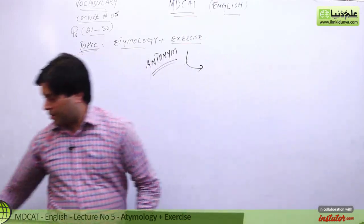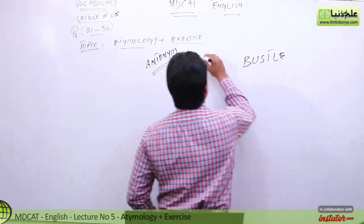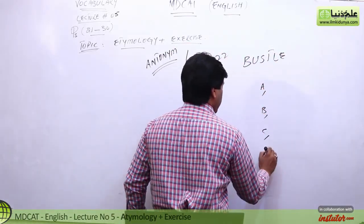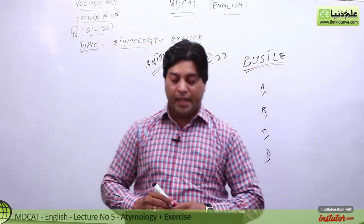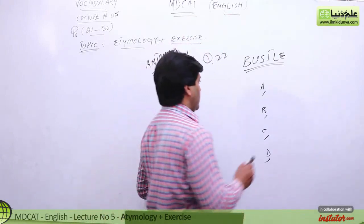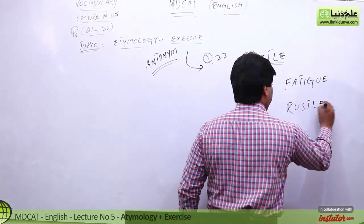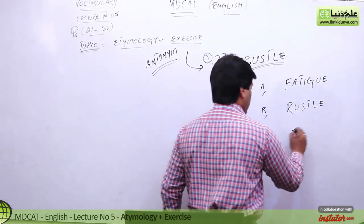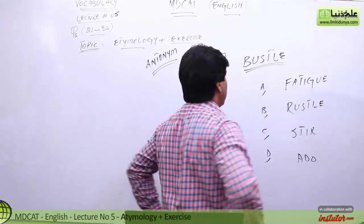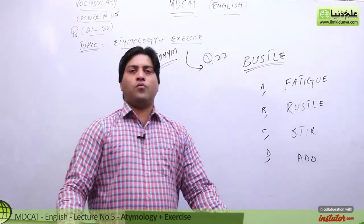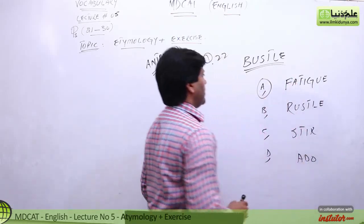The next one — question number 22 — word is bustle. Options: A, B, C, D — fatigue, rustle, stir, ado. Hustle-bustle word para hoga aap ne — hustle-bustle. What's bustle? It's not such a unique word. In these options, option A is fatigue.